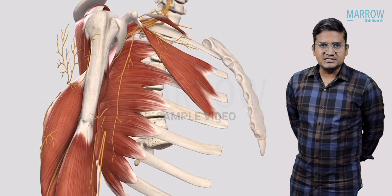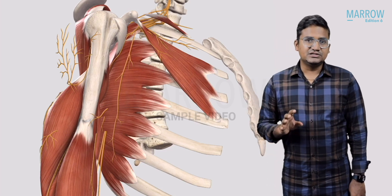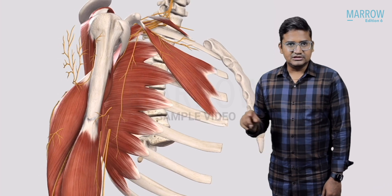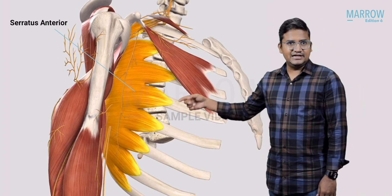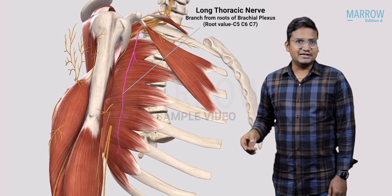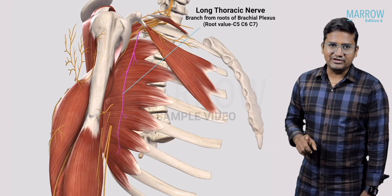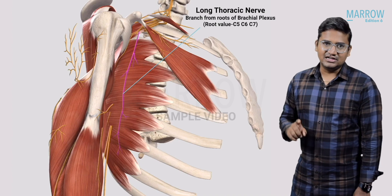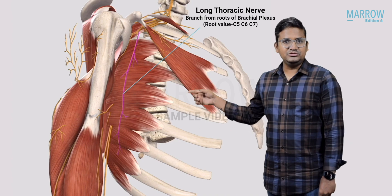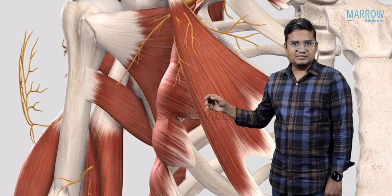Now we are going to see some branches from the brachial plexus. Over the serratus anterior muscle you can see a nerve — that is our long thoracic nerve, with root value C5, C6, C7. The long thoracic nerve is a branch from the root of the brachial plexus — C5, C6, and C7 roots.